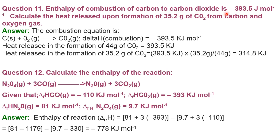Next: the enthalpy of combustion of carbon to CO₂ is −393.5 kJ/mol. Calculate the heat released upon formation of 35.2 g of CO₂. The combustion equation is: C + O₂ → CO₂. Molar mass of CO₂ = 44 g/mol. So 393.5 kJ is released per 44 g of CO₂. For 35.2 g: heat = 35.2 × 393.5 ÷ 44 = 314.8 kJ.